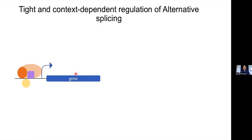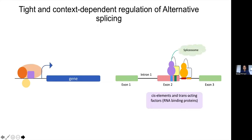Much like transcription, alternative splicing is also regulated through motifs and factors binding to these motifs. The motifs are present in pre-mRNA and are called cis elements, recognized and bound by RNA-binding proteins — the trans factors. Together, they govern spliceosome recruitment. If they promote spliceosome recruitment and increase inclusion of the corresponding exon, we call them activators; if they do the opposite, we call them repressors.